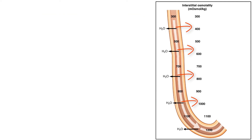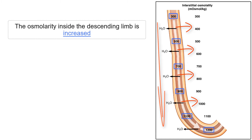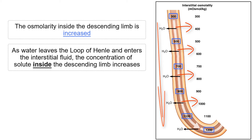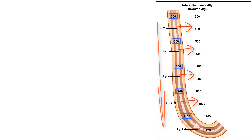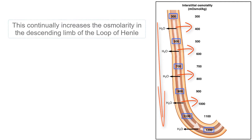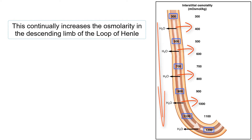However, as water leaves the descending limb and filtrate moves further down the descending limb of the loop of Henle, the osmolarity inside the descending limb increases. This is because as water leaves the loop of Henle and enters the interstitial fluid, the concentration of solute inside the descending limb increases. This is not because more solute is added, but because the same amount of solute in less water indicates a higher osmolarity. Thus, as water leaves the descending limb, the solutes that remain are in a continually decreasing volume of water, which continually increases the osmolarity in the descending limb.